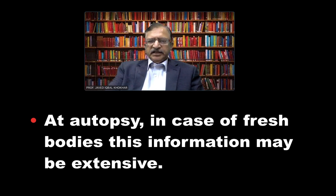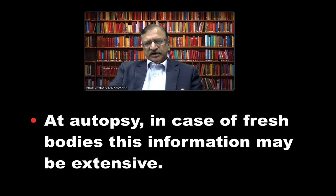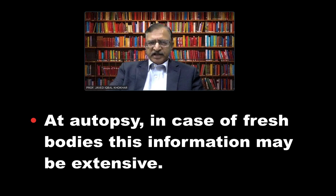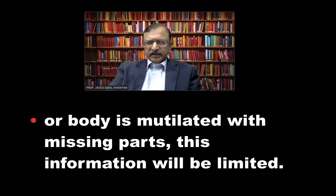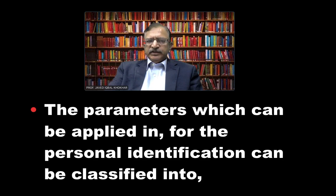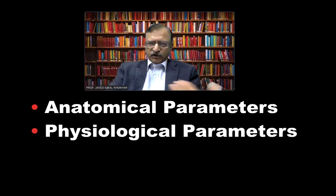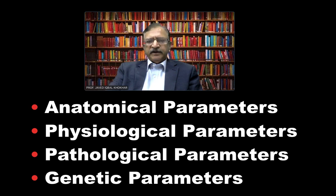At autopsy, in the case of a fresh body, this information can be quite extensive because the body is in front of you — from head to toe, every characteristic is specific to that individual: the hair, the face, the eye, the mustache, the beard, the chin, the ears — everything. But when the body is in a putrefied state, especially in much advanced state or mutilated with missing parts, this information becomes limited. The parameters for personal identification can be classified into anatomical parameters, physiological parameters, pathological parameters, or genetic parameters.